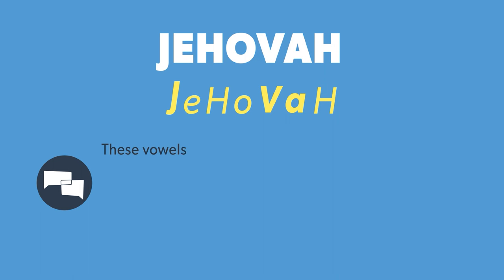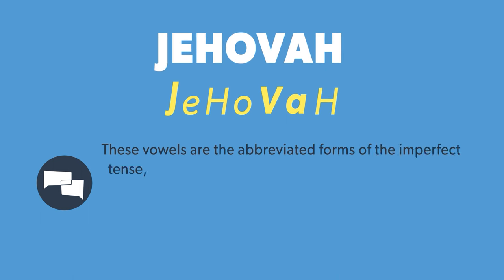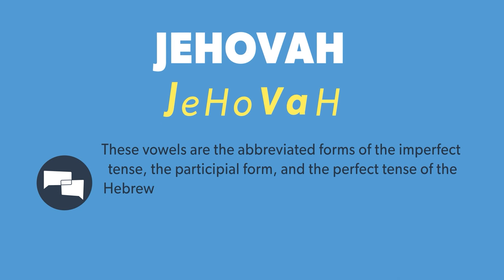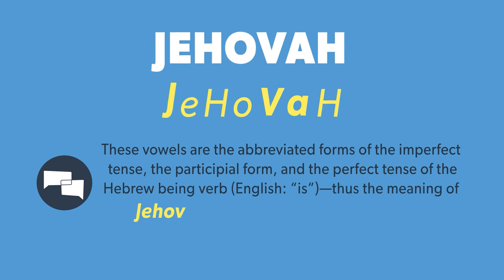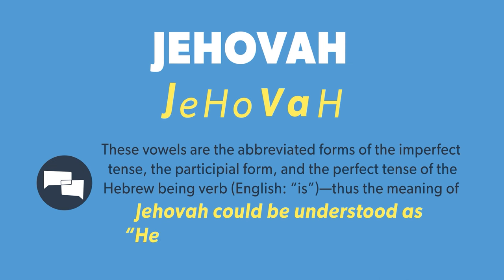These vowels are the abbreviated forms of the imperfect tense, the participial form, and the perfect tense of the Hebrew being verb. Thus the meaning of Jehovah could be understood as 'He who will be, is, and has been.'